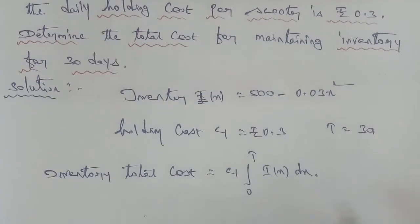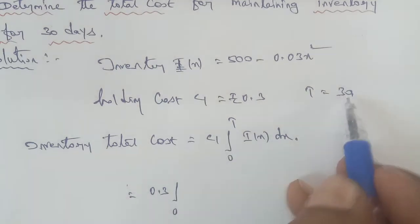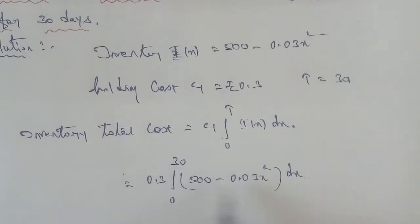Now substituting into the formula, the answer is equal to C1 value, which is 0.3. So 0.3, and integral 0 to T, T in this case is 30, I(X), that is 500 - 0.03X², into dX.